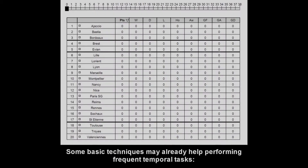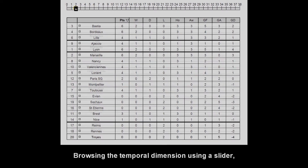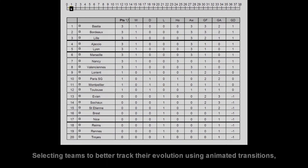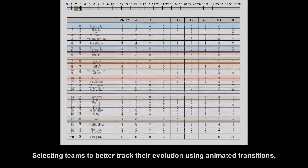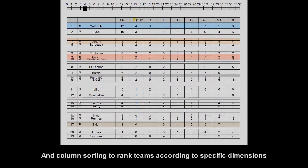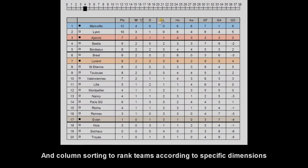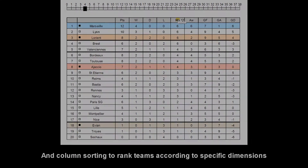To perform temporal tasks, well-known visualization and interaction techniques may help, such as sliders to browse the temporal dimension, animated transitions and row highlighting to follow a team, and column sorting to rank teams according to a specific dimension. However, performing complex temporal tasks is difficult using these generic techniques.